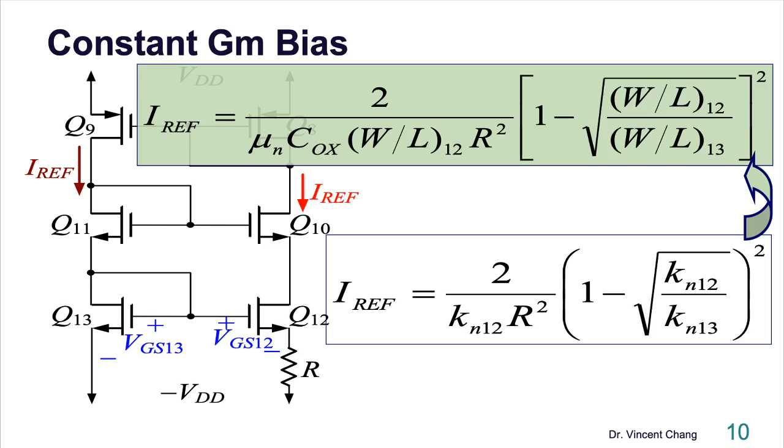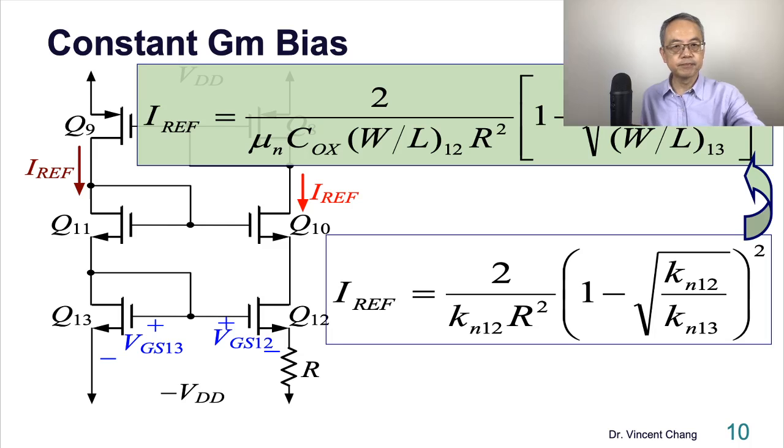Therefore, let's substitute k by mobility capacitance and W over L of Q12, and replace the ratio of k with the geometry ratio: W over L of Q12 divided by W over L of Q13. All right, so now you see the reference current - who decided reference current? Two things: number one, geometry, and number two, the resistance. In other words, if the geometry ratio can be precisely controlled and if we can precisely control the resistance value, then you can get a stable reference current.